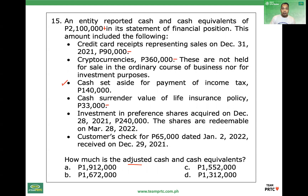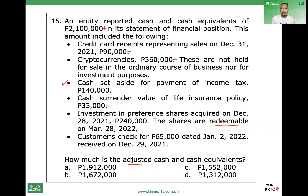Investment in preference shares acquired December 28, 2021 — 240,000. The shares are redeemable on March 28, 2022. Legally it's equity, but because it's redeemable, in substance it's a liability. Normally equity investments don't qualify as cash equivalents, unless in substance they are a liability — effectively a debt instrument. Since it matures in not more than three months, it qualifies as a cash equivalent. Properly included, no adjustment.